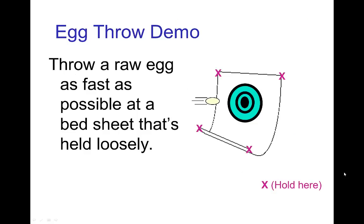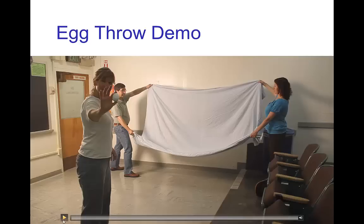Let's look at another demonstration that illustrates the connection between momentum and force of impact, especially the time of impact. In this case, we're going to throw a raw egg as fast as possible at a loosely held bedsheet. Let's see this demonstration.